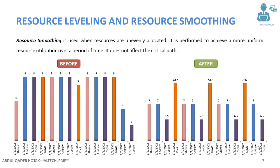Resource smoothing is used when resources are unevenly allocated. It is performed to achieve a more uniform resource utilization over a period of time. It does not affect the critical path.